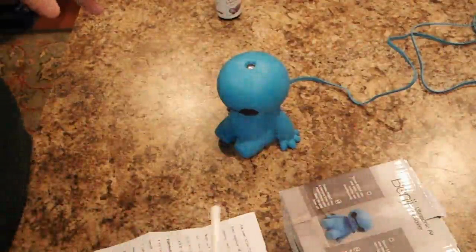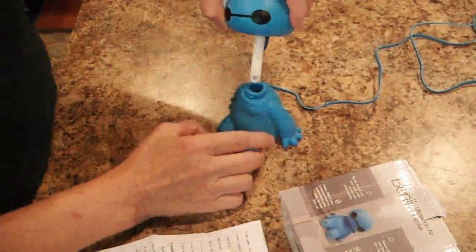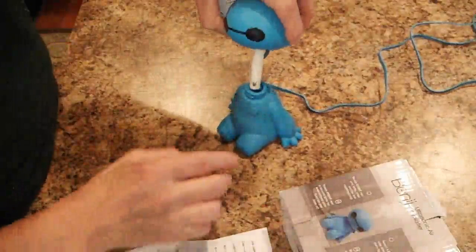It only weighs 3.7 ounces. It comes with an extra wick. Let me show you. You put the water in there and the oil. That's the wick and you can change it out with this one.